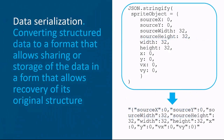Data serialization refers to converting structured data to a format that allows sharing or storage of the data in a form that allows recovery of its original structure. In this case, you have a JavaScript object that is being stringified, or turned into a string of data for being sent over the internet. At its destination, this string can be parsed and turned back into an object.